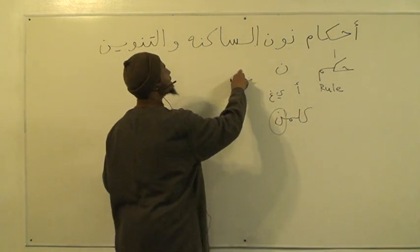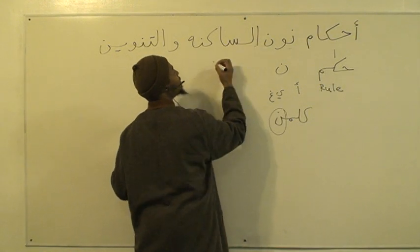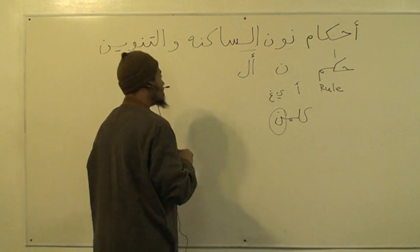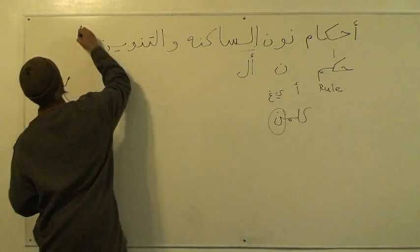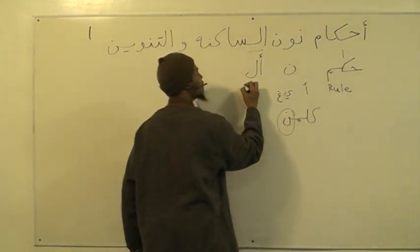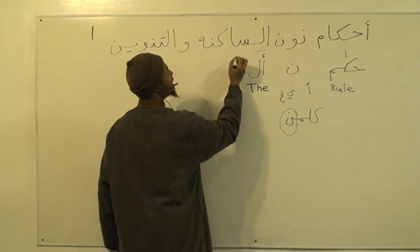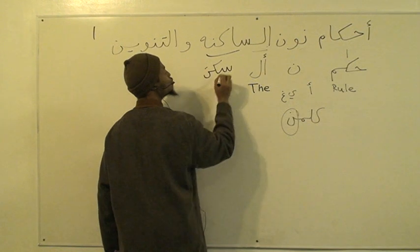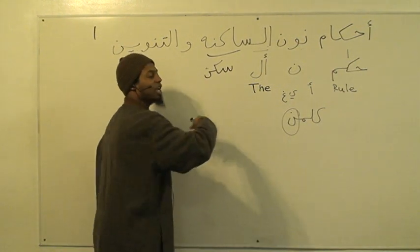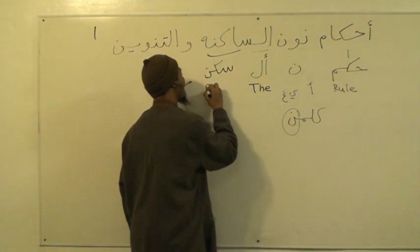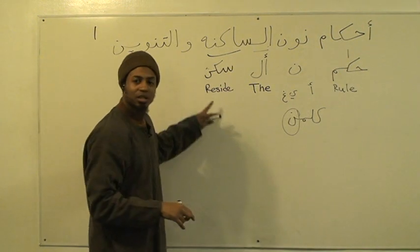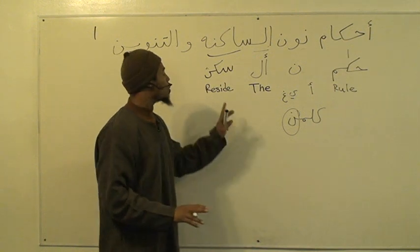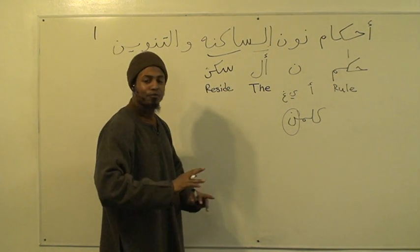The next word is as-sakinah. If we break it down, we have alif and lam, which mean 'the.' The rest of the word is from the root word sin-kaf-noon, which means sakina — 'he resided.' It means to reside, to sit still, to be at rest, to have no movement.